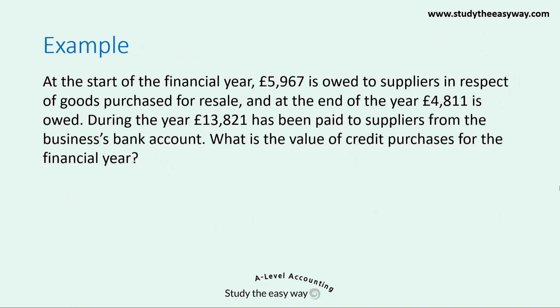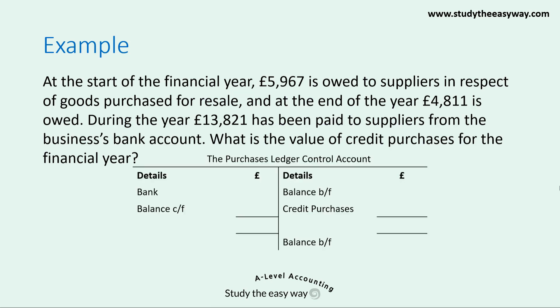Let's have a look at an example. At the start of the financial year, £5,967 is owed to suppliers in respect of goods purchased for resale, and at the end of the year, £4,811 is owed. During the year, £13,821 has been paid to suppliers from the business's bank account. What is the value of credit purchases for the financial year? To answer the question, we'll prepare the purchase ledger control account. Why don't you pause the video now and have a go at completing it, then compare your answer to mine.